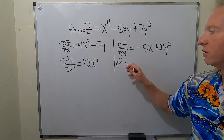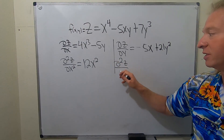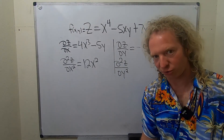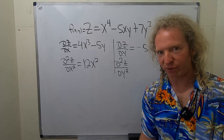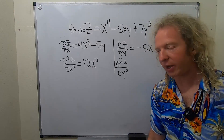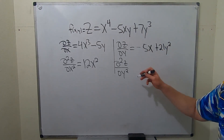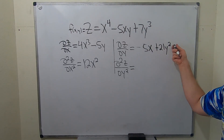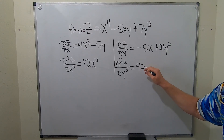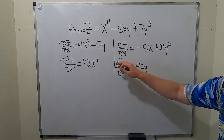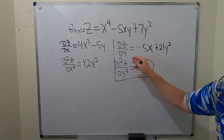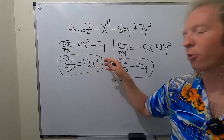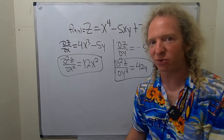Let's do del squared z del y squared. This is the second-order partial derivative with respect to y. So this will be 0, and this will be 42y. So this is one answer and this is another answer — we want the second-order partial derivative in this question.